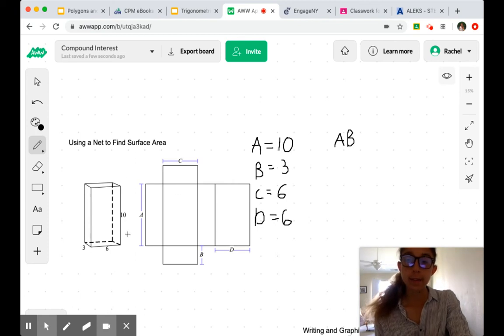I was right the first time. A, B are the longer, skinny sides, our narrow ones, 10 times 3.